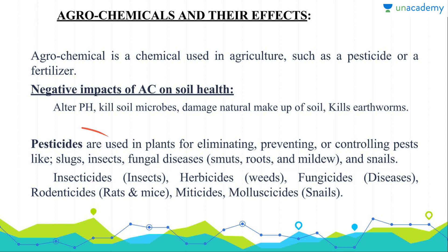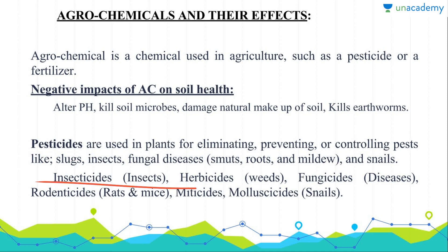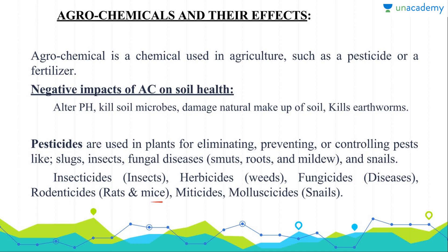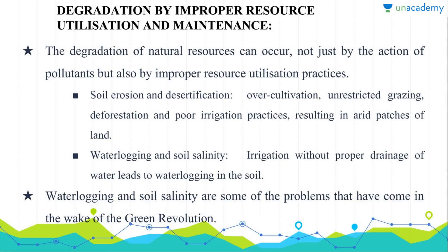Pesticide is an umbrella term. Under this we have insecticide for controlling insects, herbicide for controlling weeds, fungicides for controlling diseases, rodenticides for controlling rats and mice, and molluscicides for controlling snails.